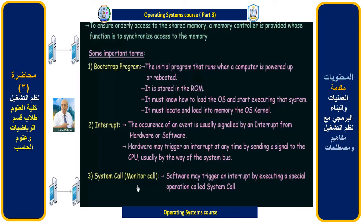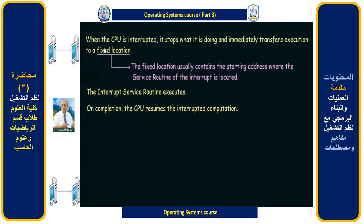Now let us see how the CPU responds when it receives an interrupt. When the CPU is interrupted, it stops what it is doing and immediately transfers execution to a fixed location. That fixed location usually contains the starting address where the service routine of the interrupt is located.